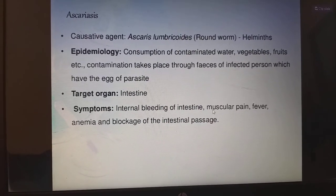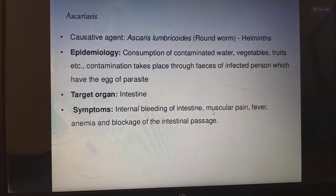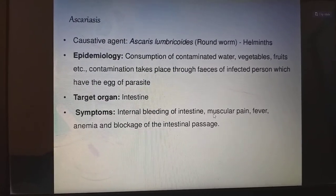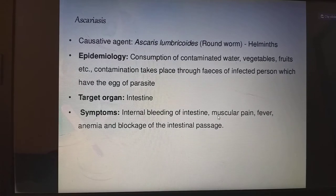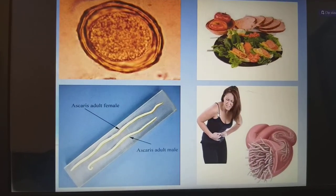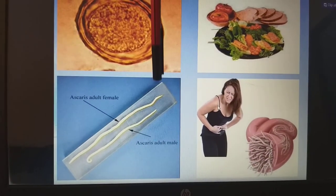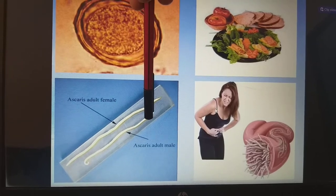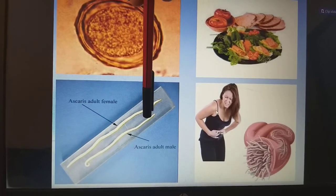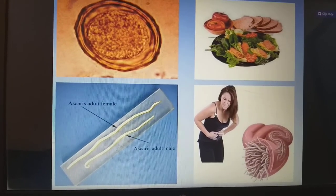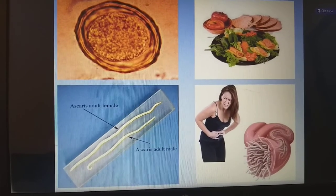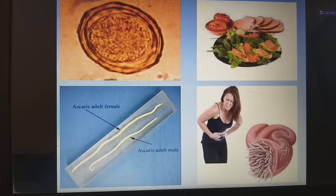Symptoms are internal bleeding of intestine, muscular pain, fever, anemia, and blockage of the intestinal passage. This is the Ascaris adult female worm and this is the Ascaris adult male. The male will be smaller than the female. This is the contaminated food, and it will infect the large intestine.